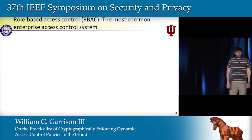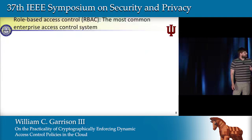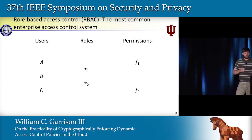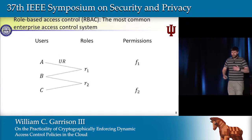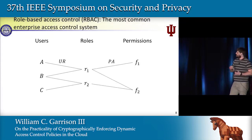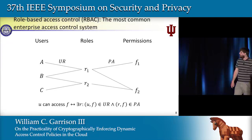In particular, we're enforcing role-based access control, or RBAC — the most common enterprise access control system. The system has a set of users, a set of permissions (file accesses), and a set of roles acting as a level of indirection between users and file accesses. Users are assigned to roles via the UR relation, and accesses are granted to roles via the PA relation. A user can access a file if she belongs to a role that has been granted access to that file.